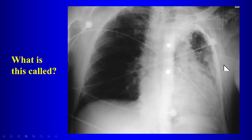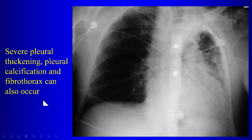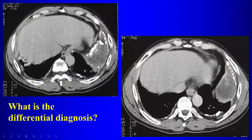Here there is extensive pleural thickening with pleural calcification, and the lung volume on that side is decreased. When we have extensive pleural scarring, pleural calcification, and pleural thickening resulting in decreased lung volume, the term for this appearance is fibrothorax. This decreases ventilation and impairs physiological function of that lung.